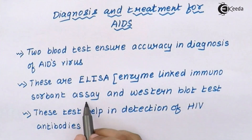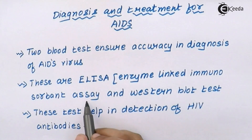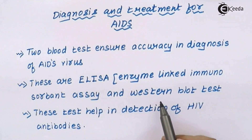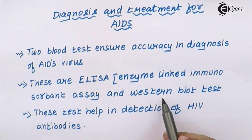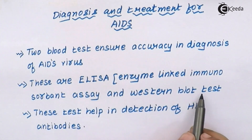ELISA could be positive even if you have typhoid, since typhoid also uses ELISA as one of its diagnostic tests. So ELISA can give false positive or false negative results. You might not have AIDS but have typhoid, and still ELISA can show a positive result — which is a false positive. So just to make sure that an individual has got AIDS, a test named the Western Blot test is done.